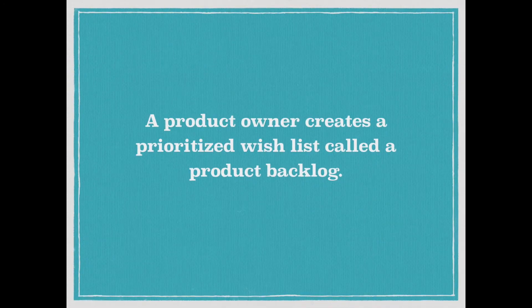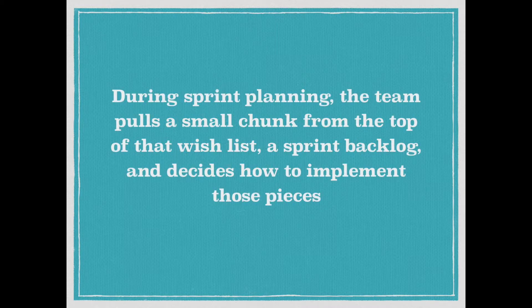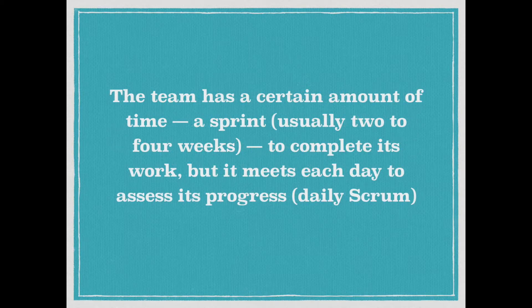There's someone called a product owner, and that person creates a wish list called the backlog — a list of what you want the product to do. Then the team gets together and, working in sprints, decides on a small chunk of that wish list to work on for a set period of time. This period is called a sprint, and they decide how to implement those pieces. The sprint is usually two to four weeks, and every day the team meets to discuss its progress — that's called the daily scrum or scrum meeting. There's also a person called the scrum master, responsible for keeping the team focused on its goal.